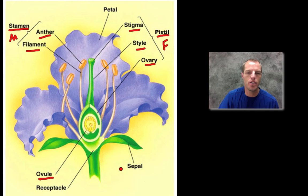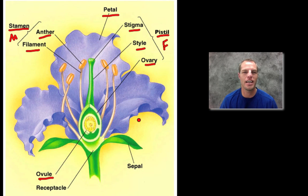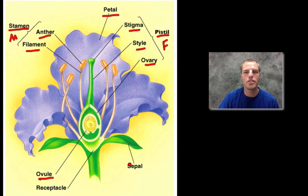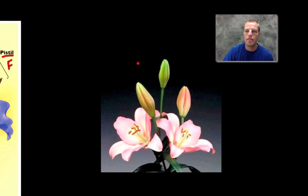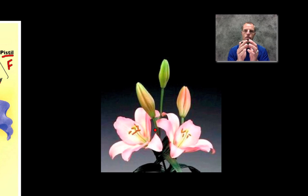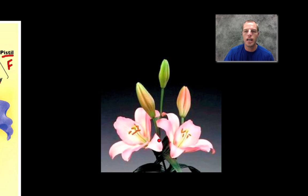A couple other parts: we're all familiar with the petal. If these weren't so pretty, I wouldn't have to buy flowers every Valentine's Day! There's a reason petals are pretty — we'll talk about how that helps pollinate the flower. Also, at the bottom we have the sepals. Sepals protect the bud as it's maturing. If you look at these lilies, some are open and some are closed — on the closed ones you can see the sepals with the bud inside. When the flower opens, the sepals open out of the way.